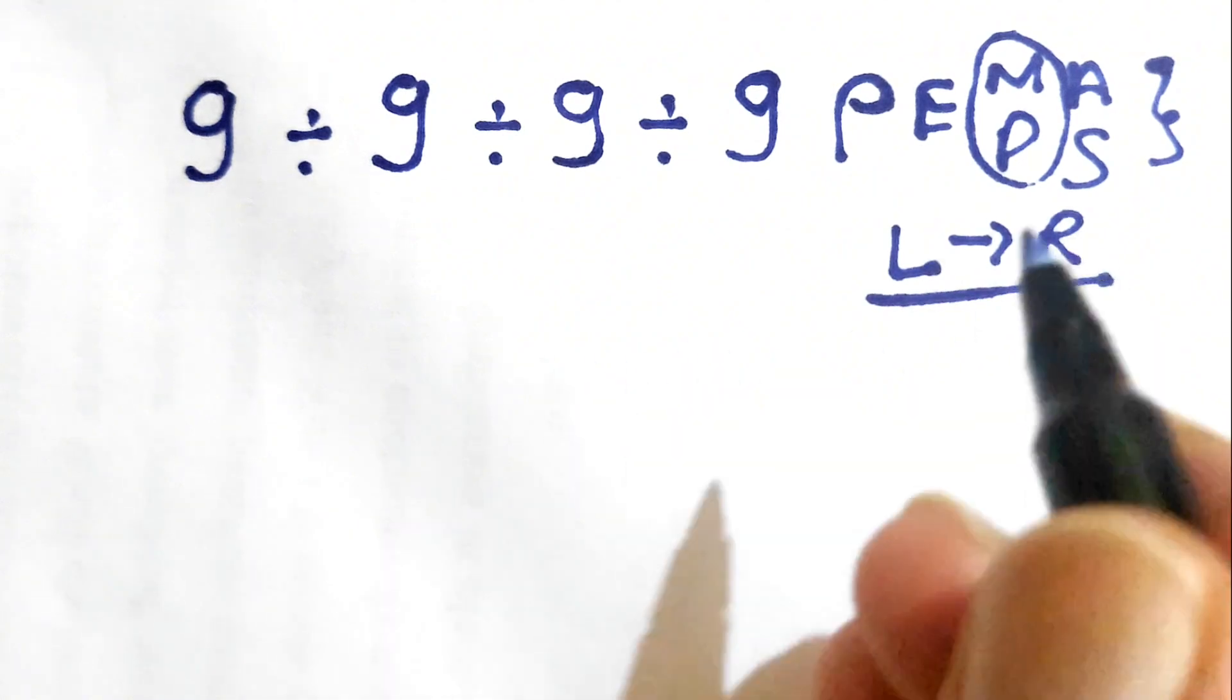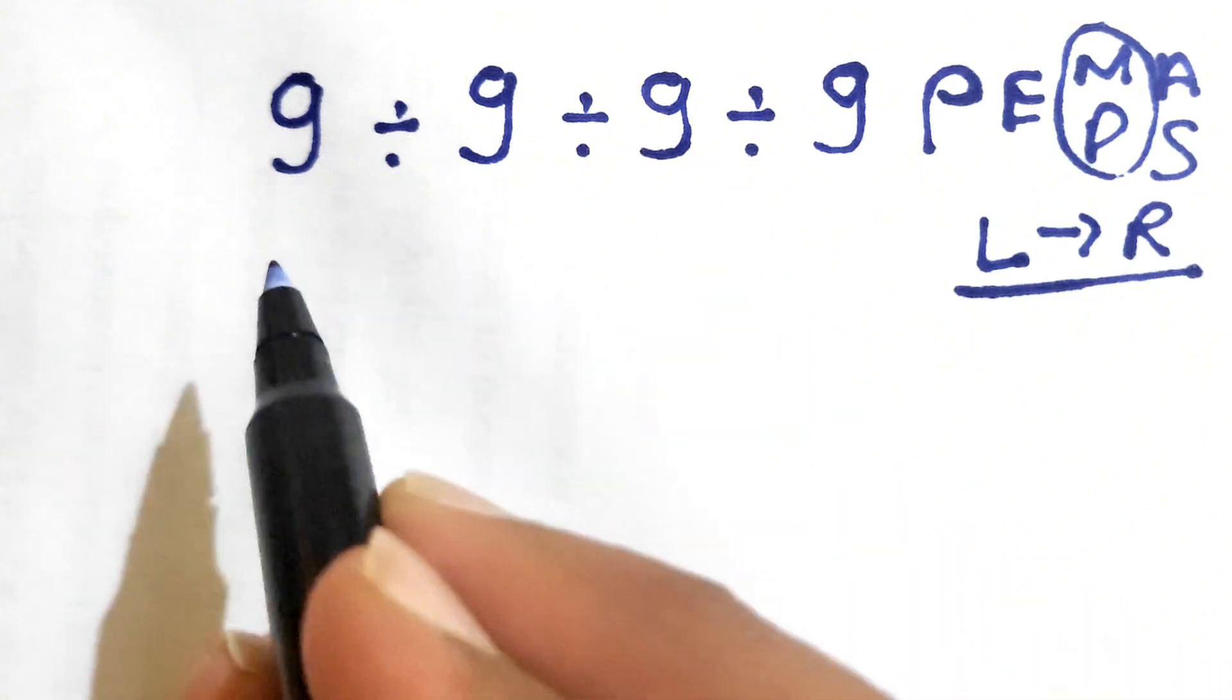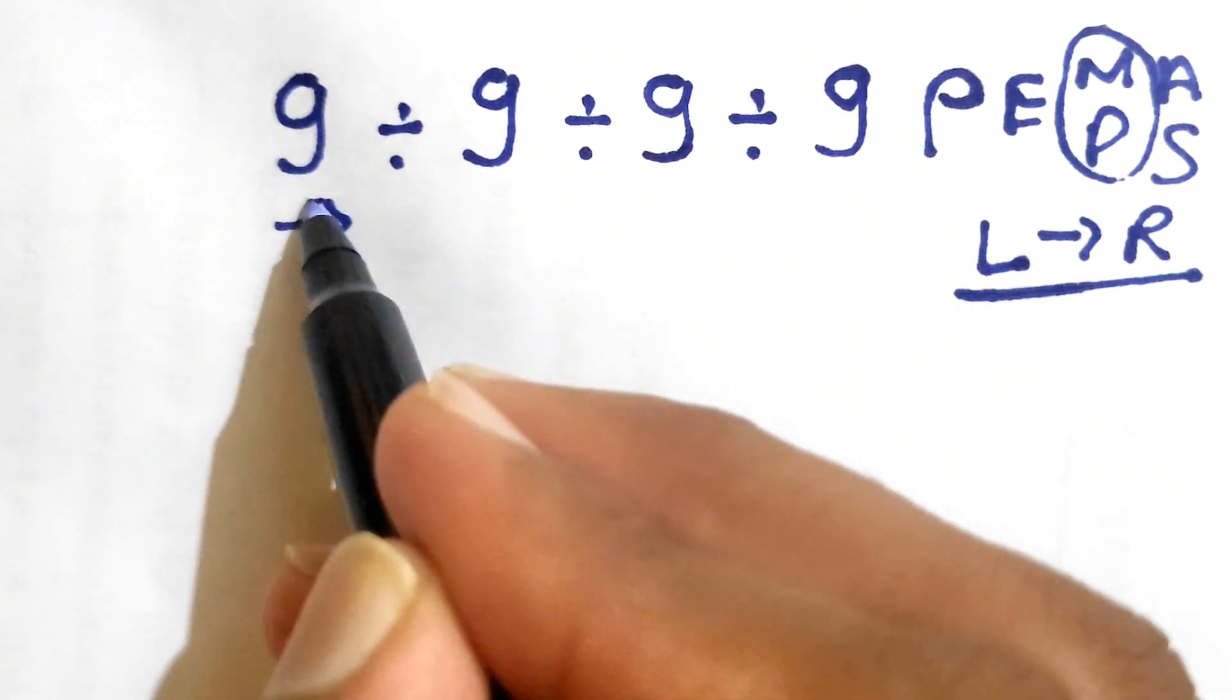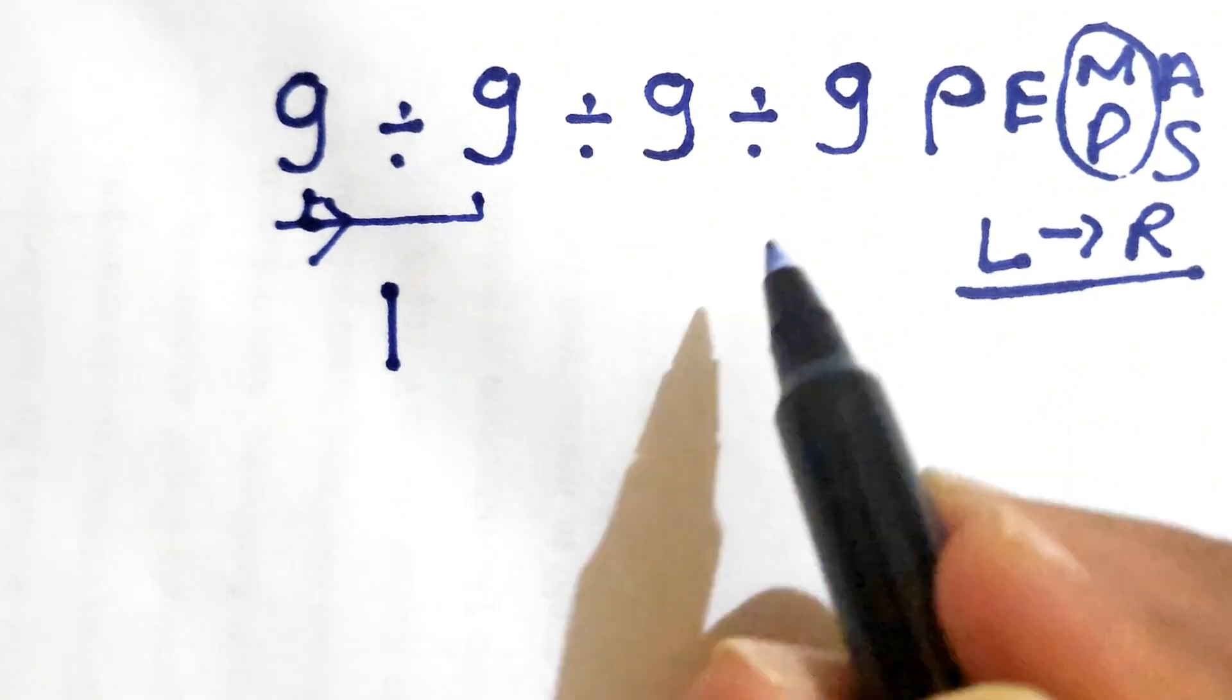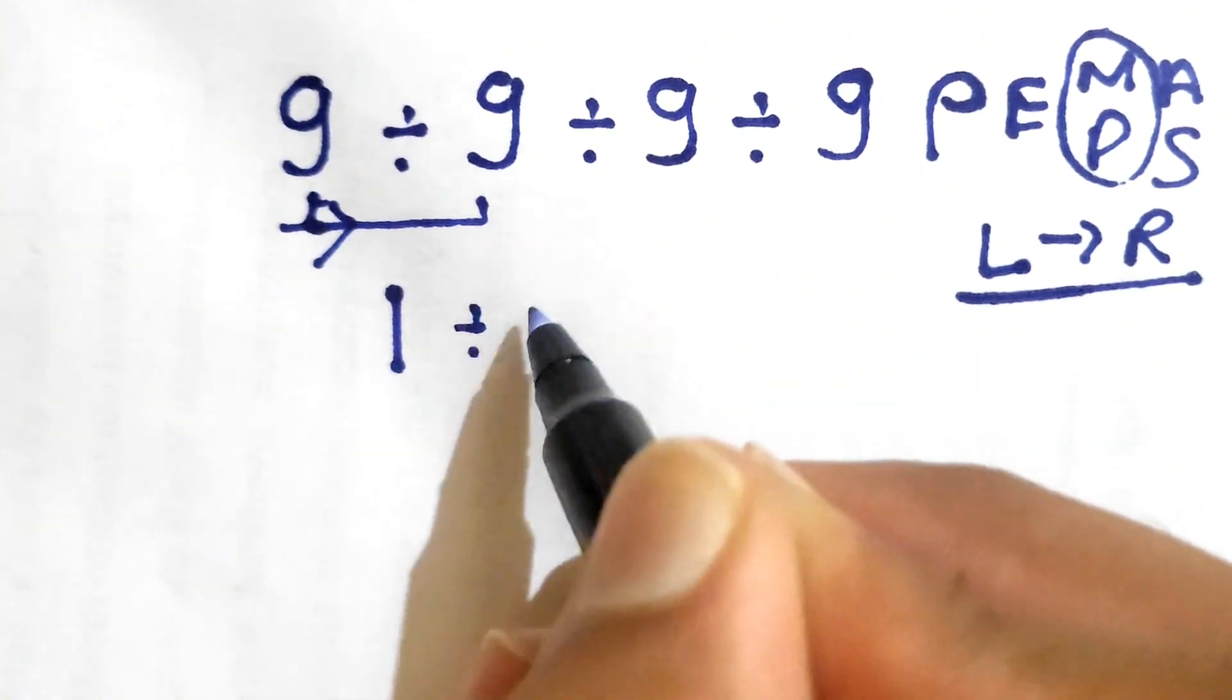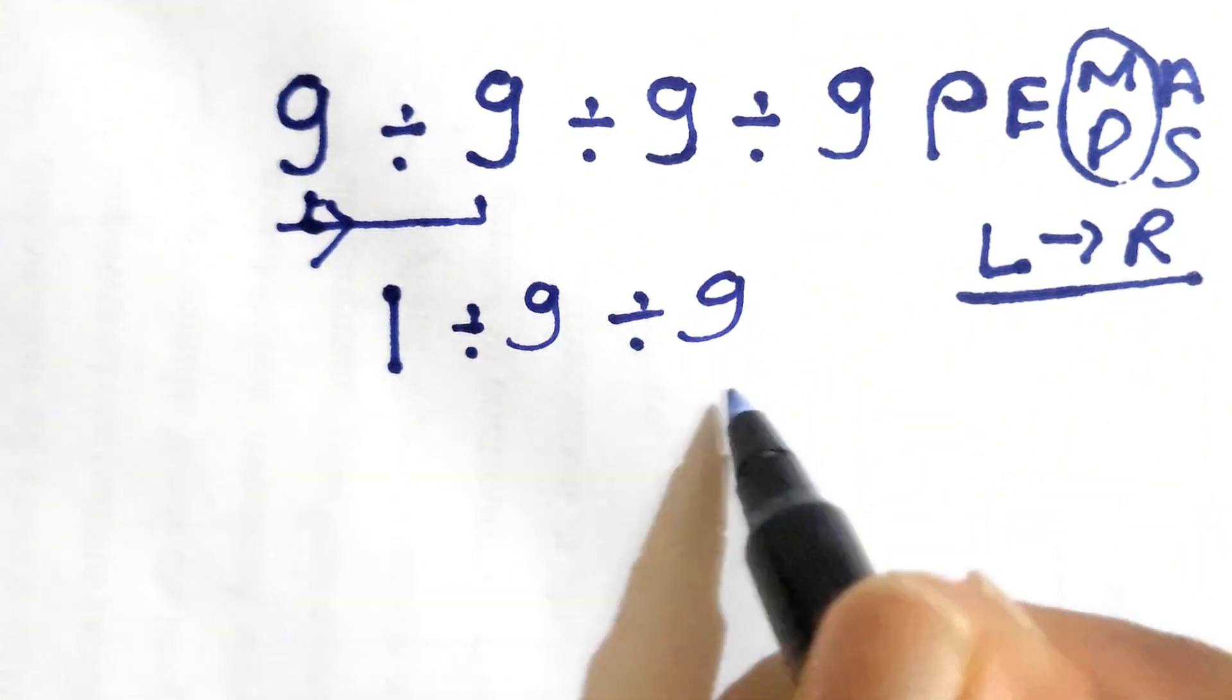Let's try solving this with the help of PEMDAS. As we can see, all the signs are of division, so we need to go from left to right. First we'll solve 9 divided by 9, that gives us 1. Now we need to rewrite the expression to make it look easier: 1 divided by 9, divided by 9.